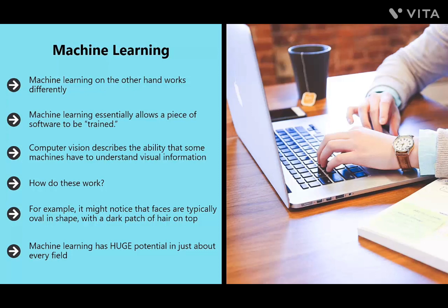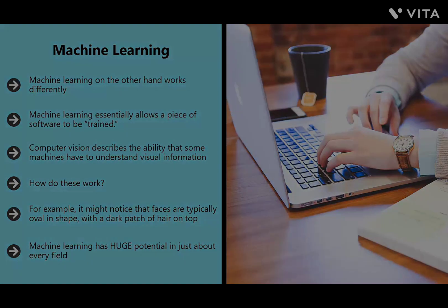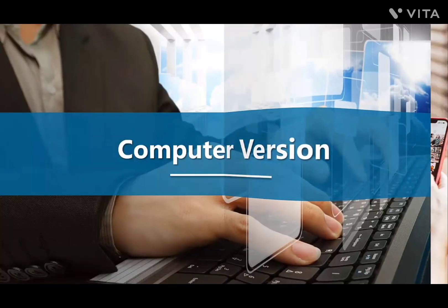Machine learning has huge potential in just about every field. It can be used to diagnose diseases more accurately than a human doctor, to advise on financial decisions, to identify fraudulent bank transfers, and much more. All of this has huge potential implications for internet marketing, and that's what we'll be exploring in the following videos.